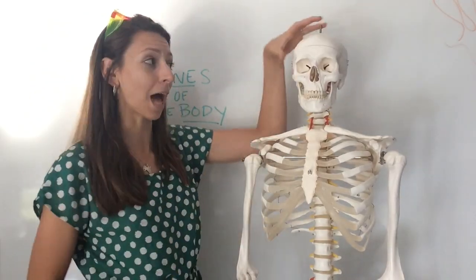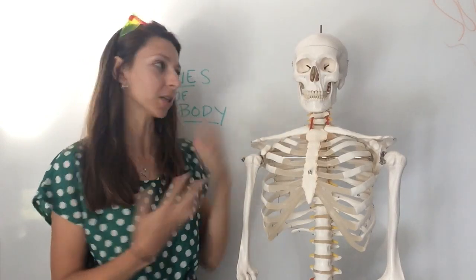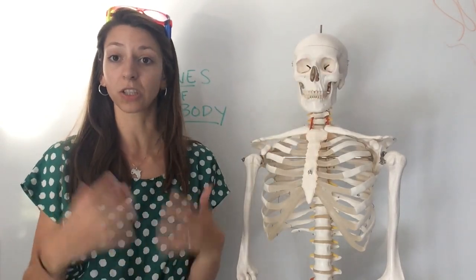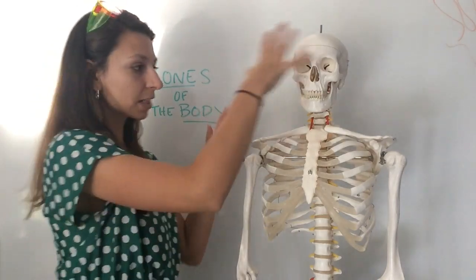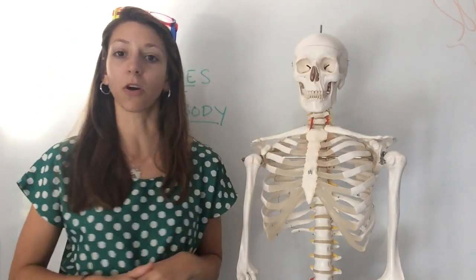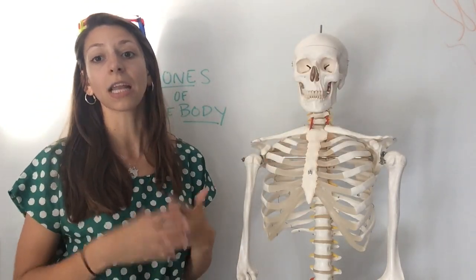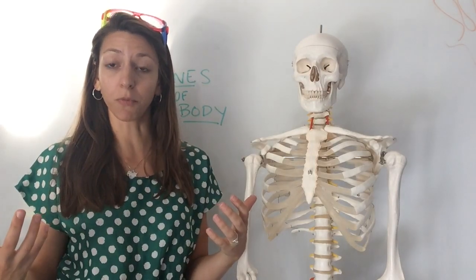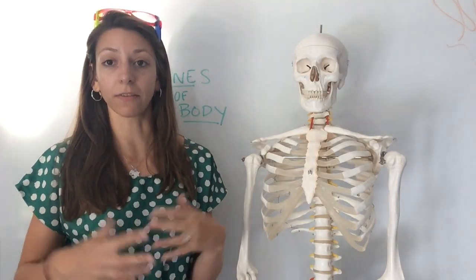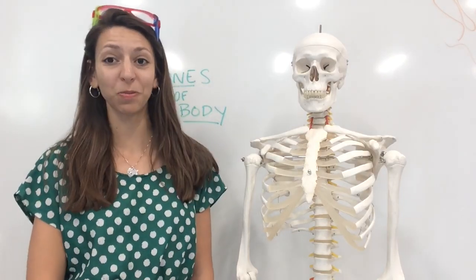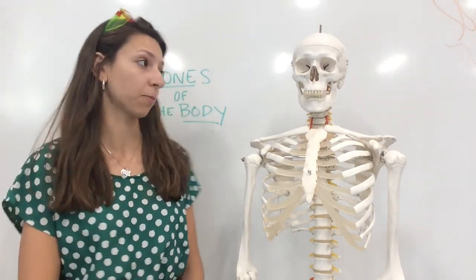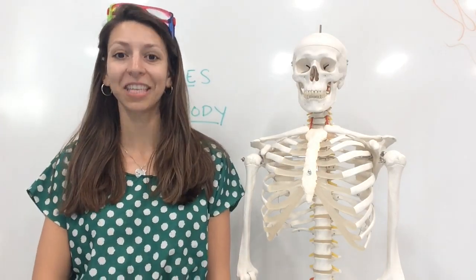Our skull is going to rest at the top of the spinal column and has two main parts: the cranium and the face. Its role is to protect the brain. Within the axial skeleton, there are 80 total bones in an adult and 87 in a child. The reason children have more is because certain bones will fuse together later in adult life. The skull itself has 22 bones and the cranium has eight, which encloses and protects the brain and provides attachments for muscles.